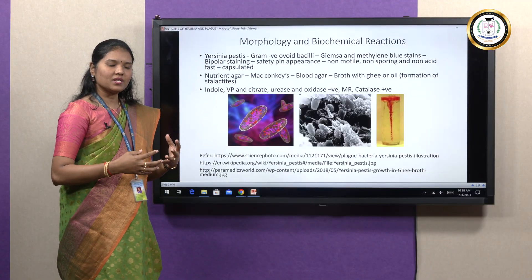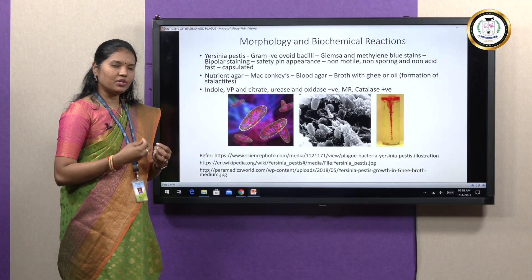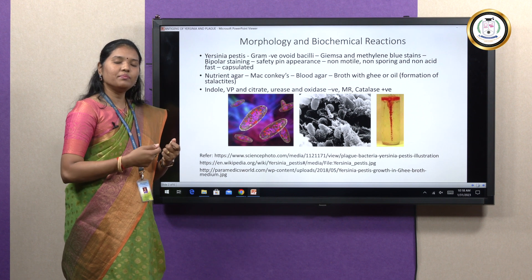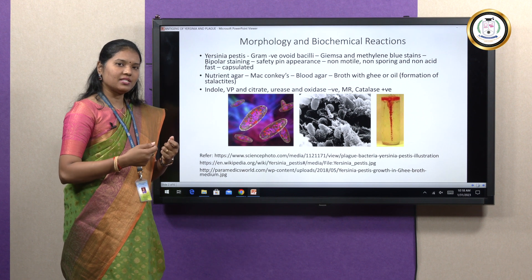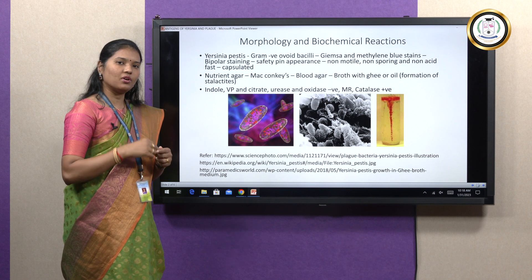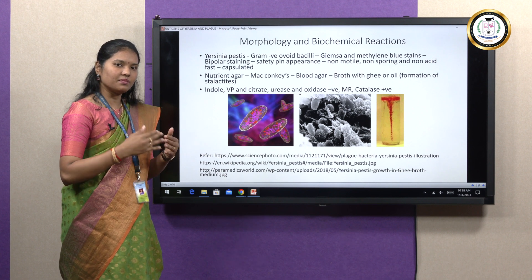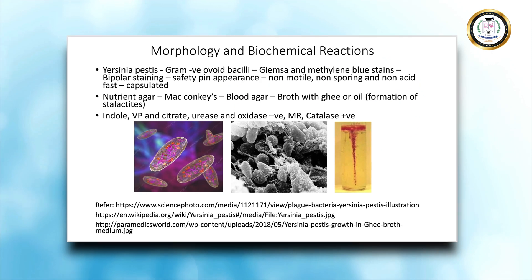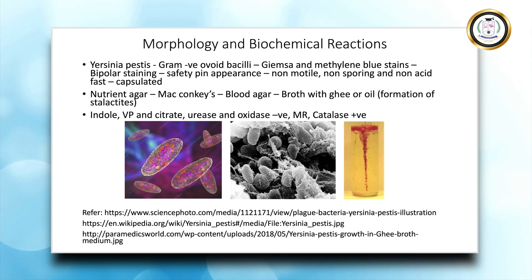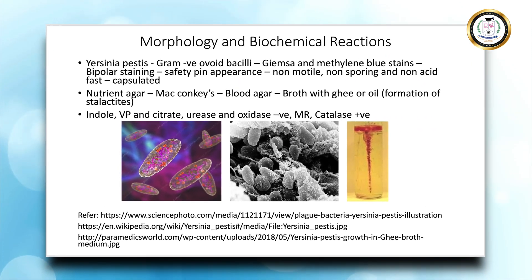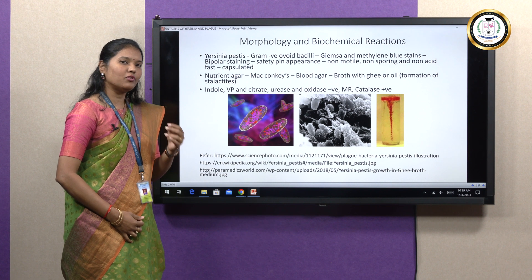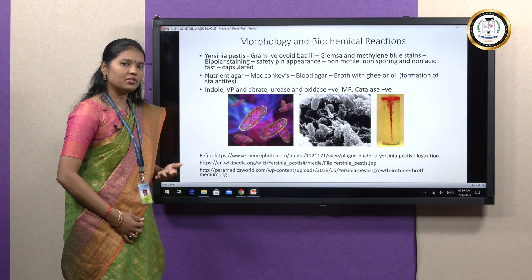Stalactites are sharp mineral deposits that hang from the roofs or ceilings of mountains and caves. Similarly, Yersinia pestis forms a stalactite-like growth when grown in nutrient broth containing oil or ghee floated on top of the broth.